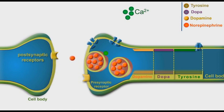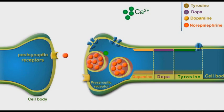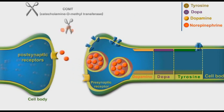Norepinephrine molecules traverse the synaptic clefts and bind to their postsynaptic receptors to exert their physiological effects. Part of the norepinephrine molecules are metabolized by the extracellular catechol-O-methyltransferase enzyme, known as COMT, into inactive metabolites.